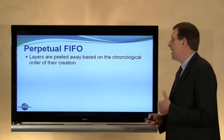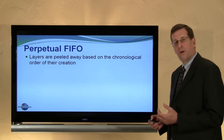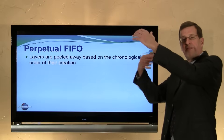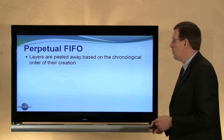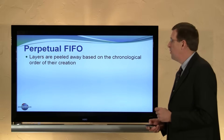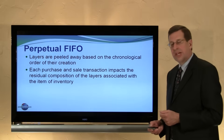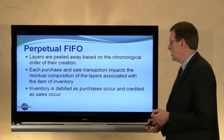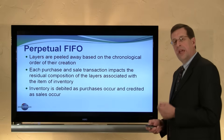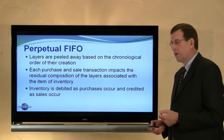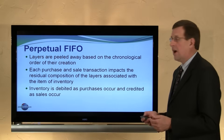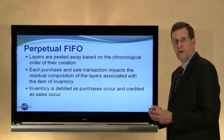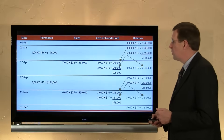With a perpetual FIFO system, layers are peeled away based on the chronological order of their creation. As we buy and sell goods, we are constantly first in, first out — selling those earliest inventory layers that exist at the time of the sale. Each purchase and sale transaction impacts the residual composition of layers, and our general ledger is updated in real time. Inventory is debited as purchases occur and credited simultaneously when recording a sale. We will not use a purchases account; instead we maintain a real-time running record directly in our inventory accounts.